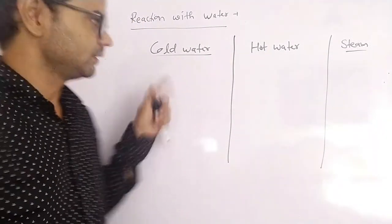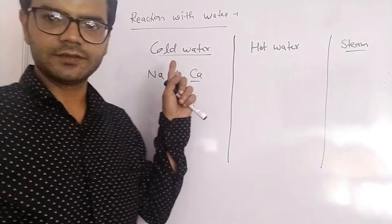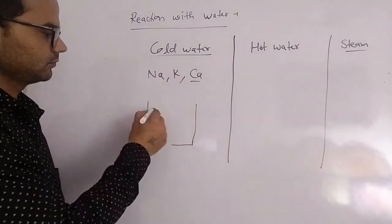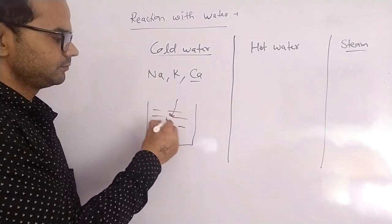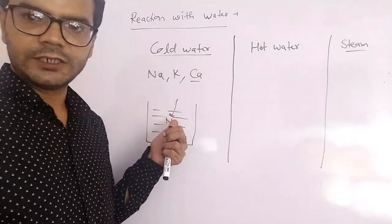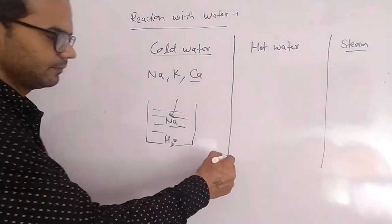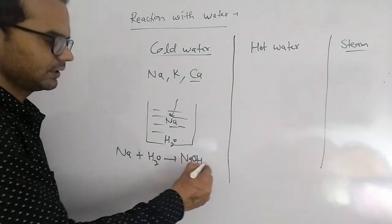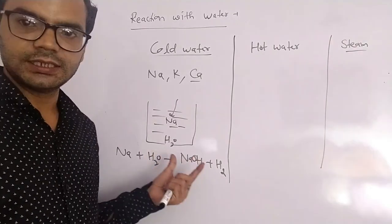Highly reactive metals like sodium, potassium, and calcium react with cold water. If we add a piece of sodium to cold water — as we know sodium is an active metal — it reacts readily with the water and forms sodium hydroxide, and hydrogen gas is released.